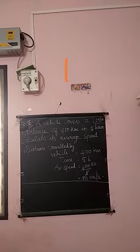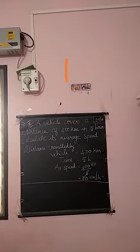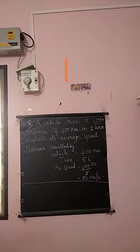Average speed. The formula for finding average speed is: average speed equals distance by time. Here, the distance is 400 km and the time taken for travelling is 5 hours. So, average speed equals distance covered by time — 400 by 5 — equals 80 km per hour. This is the average speed.